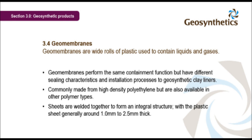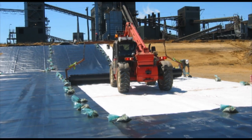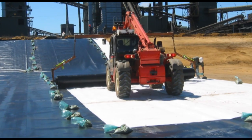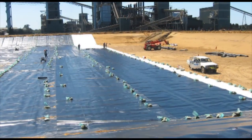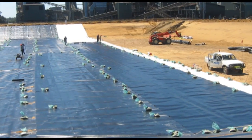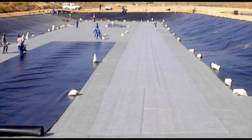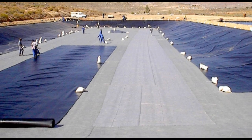Geomembranes are wide rolls of plastic used to contain liquids and gases. They perform the same containment function as GCLs but have different sealing characteristics and installation processes. Commonly made from high-density polyethylene, they are also available in other polymer types. Sheets are welded together to form an integral structure, with the plastic sheet generally around 1.0 to 2.5 millimetres thick. Geomembranes are the most commonly used containment product, with wide rolls laid out on a prepared soil base with a geotextile cushioning layer between the geomembrane and the soil.